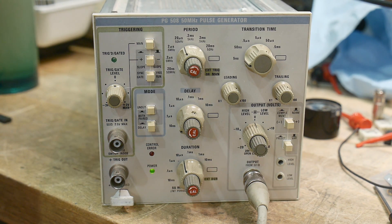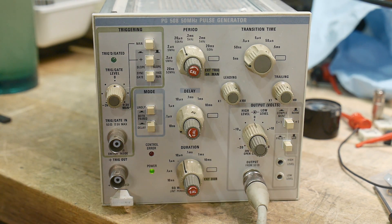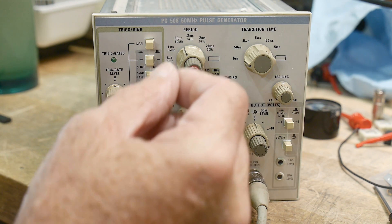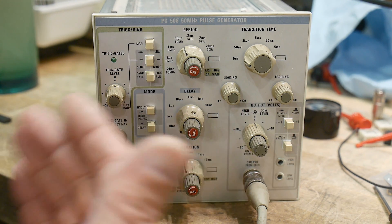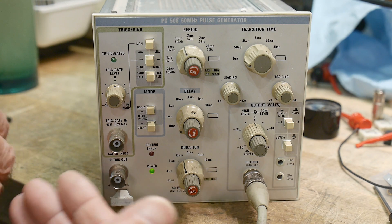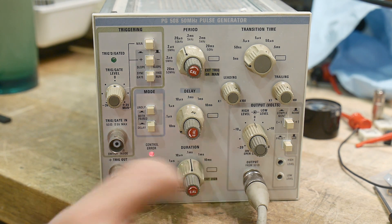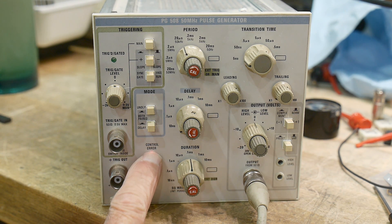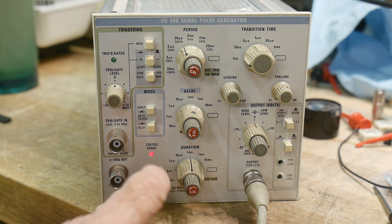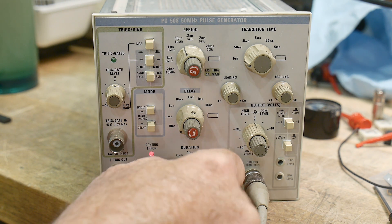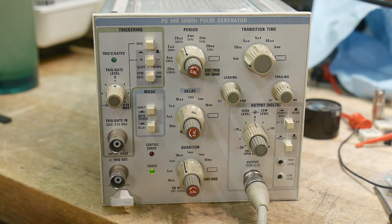I talked before about how you can get pulse generators confused. If your pulse is longer than your period, then it should complain, right? And this one does. It has this light down here that says control error. I don't know how they detect that but it says, you're doing something wrong. That's got to be off or it be operating correctly.